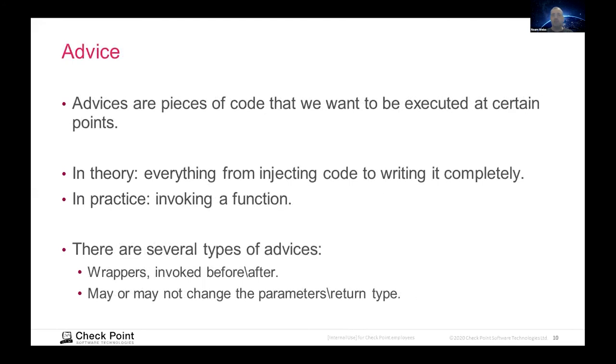So that's what a pointcut is. And advice similarly is a piece of code that we want to be executed. And in theory, that can be anything from injecting a few lines of code at a certain position to completely rewriting the program at that point. When in practice, it's probably some sort of function that we wrote some other place and we're invoking the function at that point. Again, we have the same kinds of types, whether it's a wrapping function, a function that we want to be called immediately before the function, immediately after, and that mix. If you think about things like copy elision, then invoking a function before and wrapping it might have a difference. So there are implications to the different types. And of course, whether or not we allow parameters and return types to be modified.